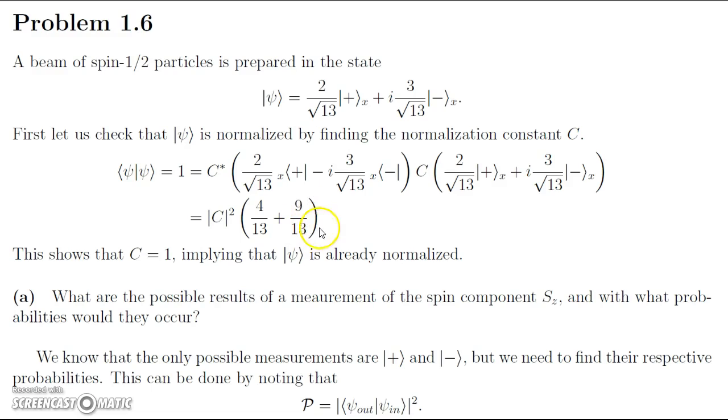We get 4 thirteenths plus 9 thirteenths. The reason we get this is because when we multiply two, if we get a bra and a ket that are represented by the same state, they have an inner product of 1. And the other two, these are orthogonal basis vectors. The bra and a ket that are orthogonal, so when we inner product them together, that becomes 0. So these factors cancel out when we do our multiplication.